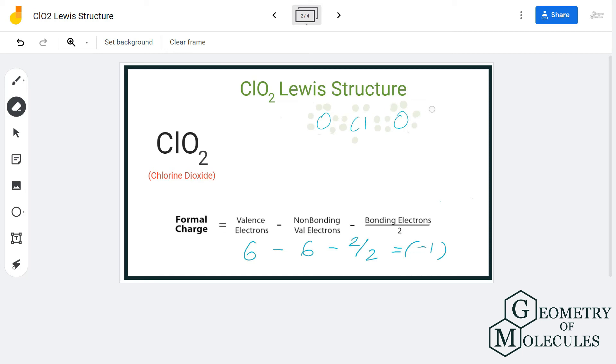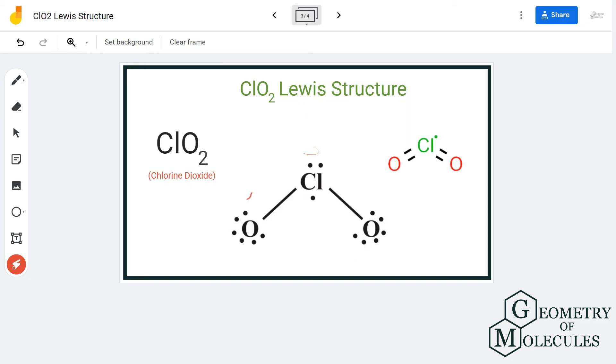This is the Lewis structure of ClO2 in which the chlorine atom is forming a double bond with oxygen atoms. Each oxygen atom has two non-bonding pairs of electrons, and chlorine has three electrons that do not participate in bond formation.